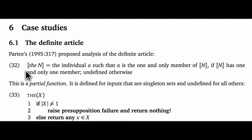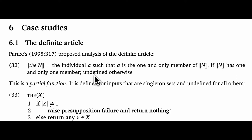Partee's analysis is given in 32 here, and it says: the meaning of 'the N' is the individual A such that A is the one and only member of the meaning of N, if the meaning of N has one and only one member — undefined otherwise. The presuppositional analysis is reflected in that closing 'undefined otherwise.' The idea is that if the incoming noun N doesn't have exactly one entity in its denotation, then the whole definite description collapses. In technical terms, this is a partial function in that it's defined for inputs that are singleton sets and undefined for all others.